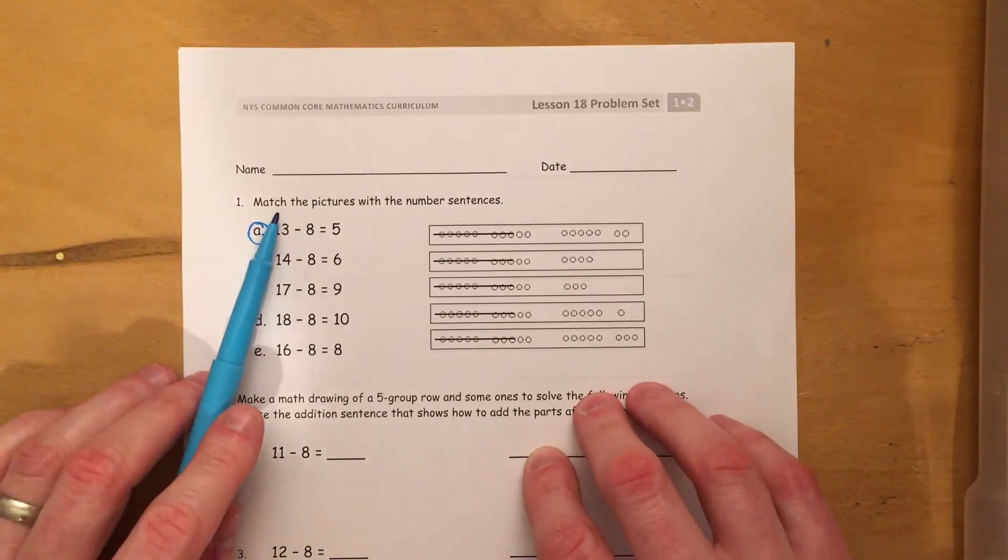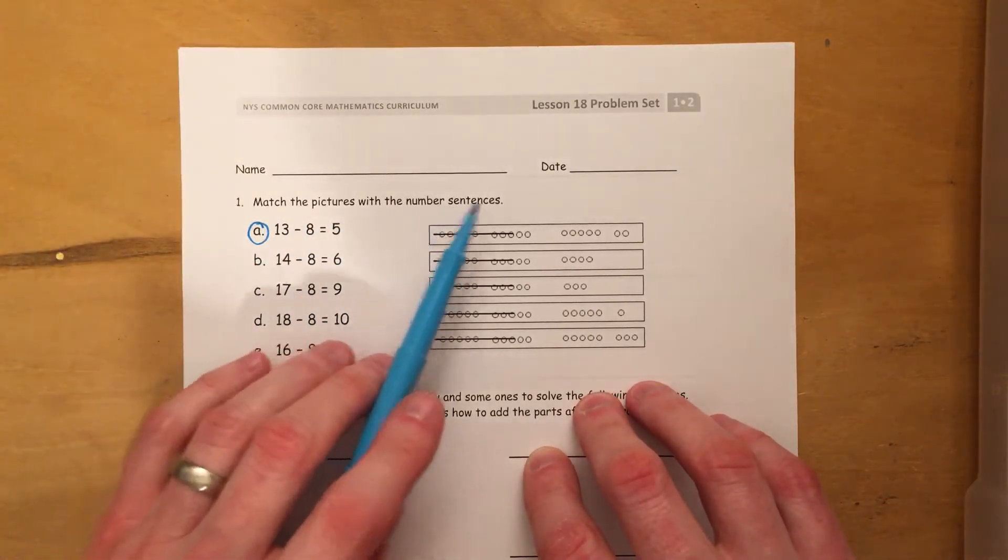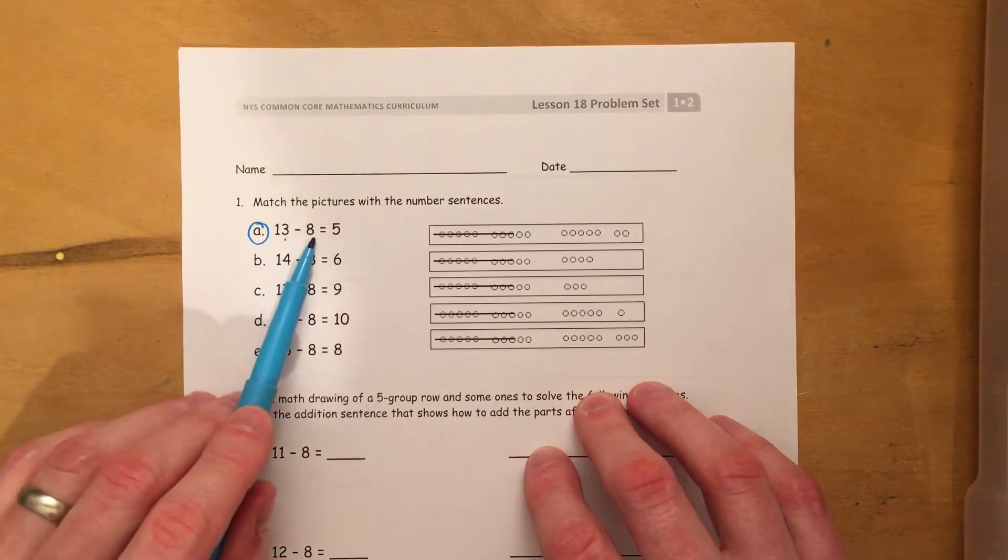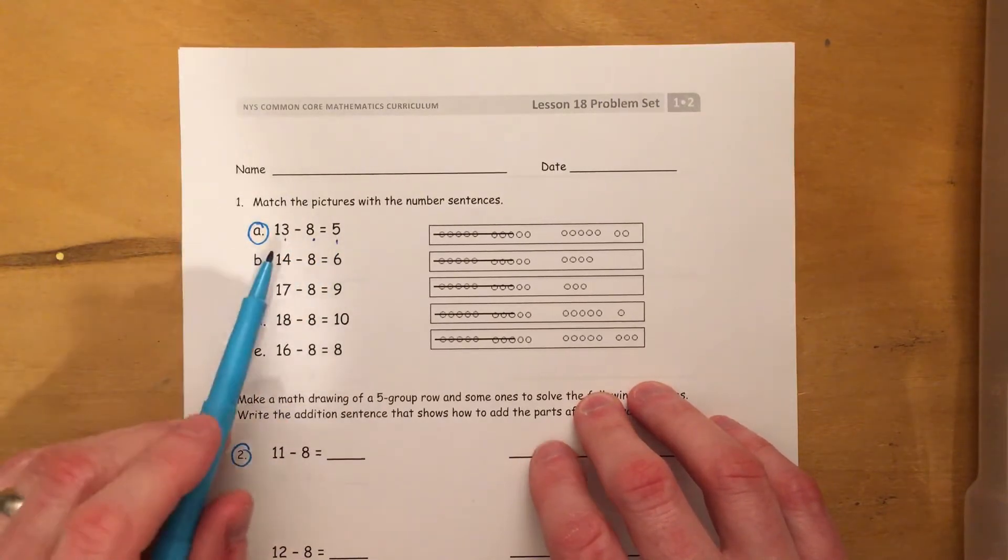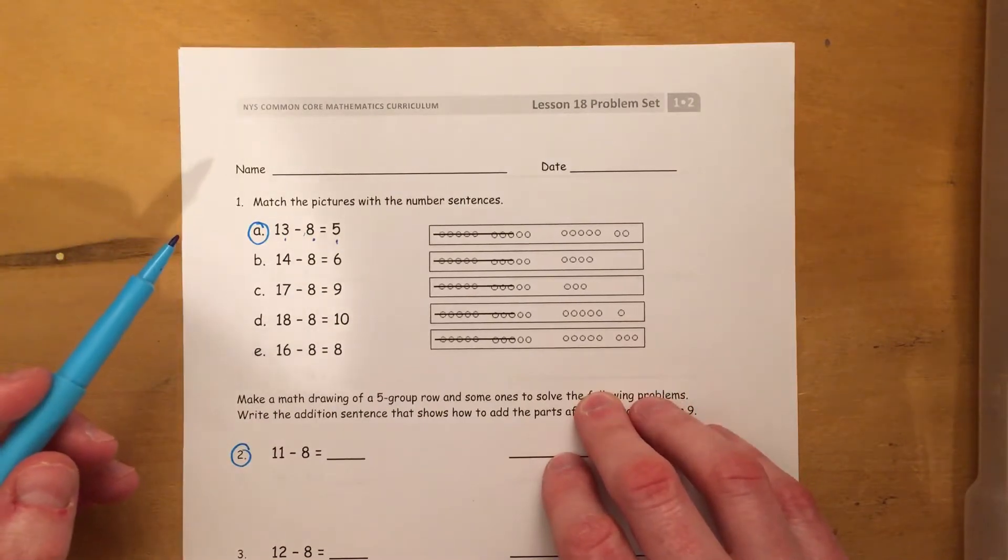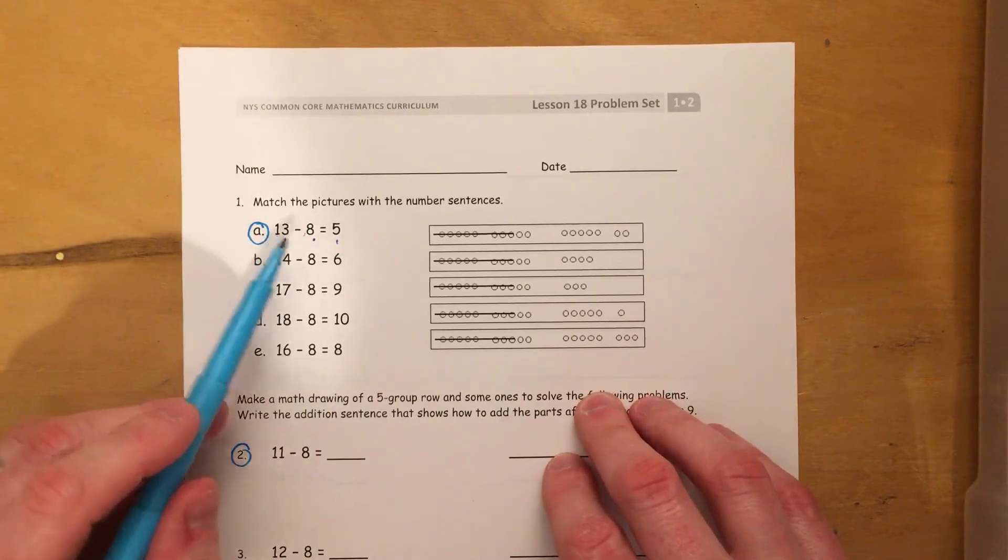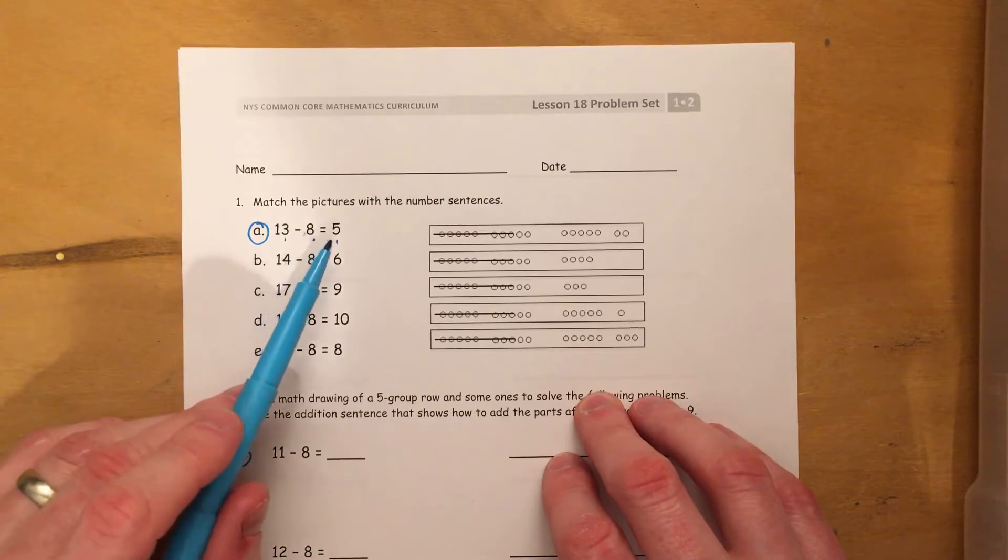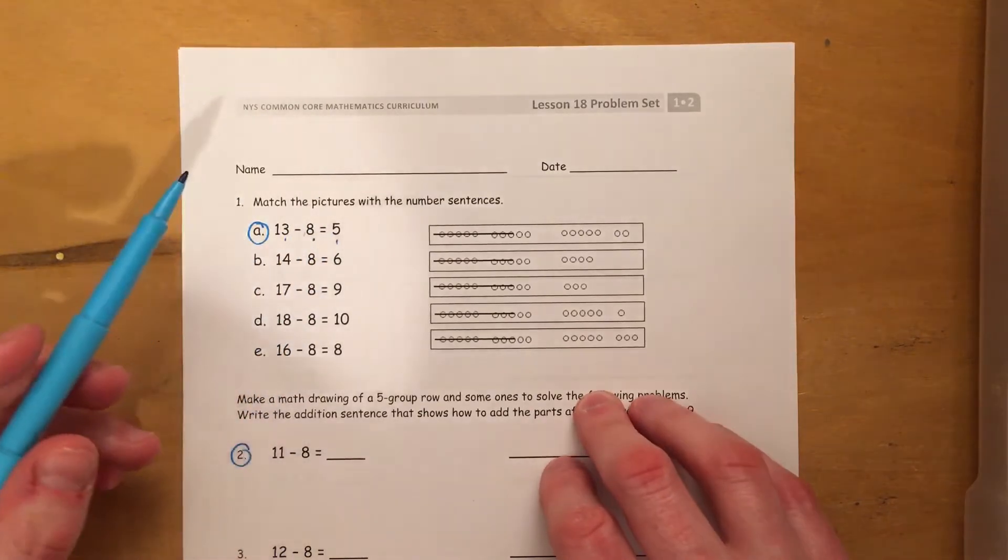So we need to match the pictures with the number sentences. So we see 13 minus 8 equals 5. So we're looking for these three numbers. So we need to find one of these that shows 13 with 8 crossed out and 5 left uncrossed out.